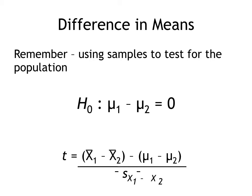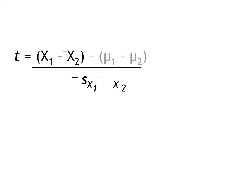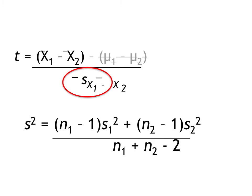Our null hypothesis gives us the value for population mean 1 minus population mean 2, which is zero. So the numerator for our test is really just the difference between the two means. Now let's look at the denominator. To find the standard error of the difference of the sampling means we have two steps. The formula using the group variances is the easiest — this is not as complicated as it seems.